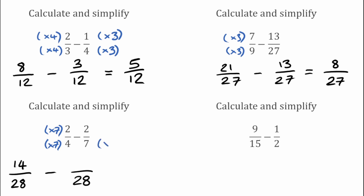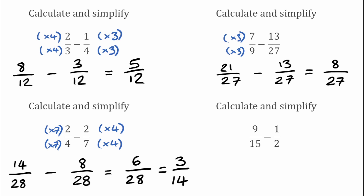On the right hand side we've multiplied that 7 by 4, which means we also multiply the top by 4: 2 times 4 gives 8. Subtracting: 14 over 28 take away 8 over 28 gives 6 over 28. But the question did say to simplify as well — I can divide top and bottom by 2: dividing the top by 2 gives 3, dividing the bottom by 2 gives 14. I can't simplify that any further, so our final answer is 3 over 14.